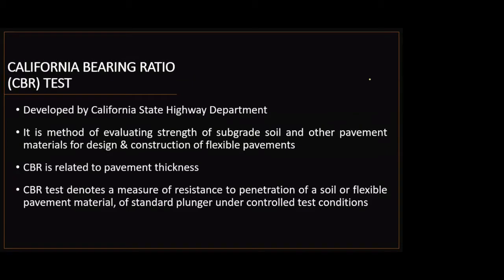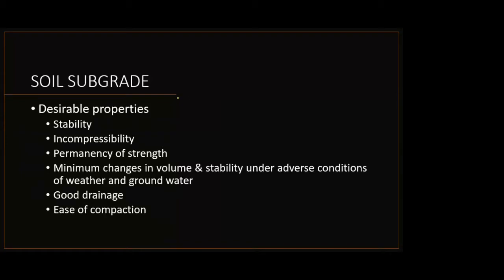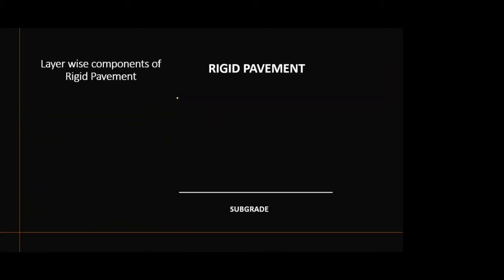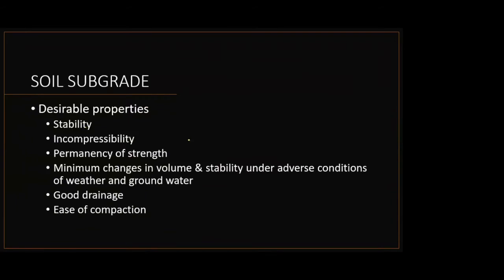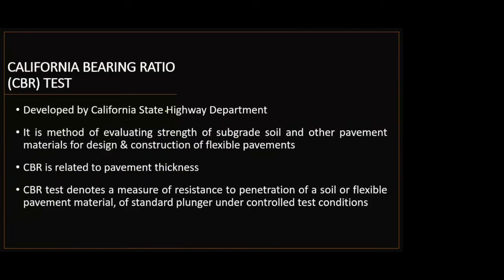Today we are going to discuss in detail the test which is widely used for determining the strength of the soil when used as a subgrade. That test is the California Bearing Ratio, also known as the CBR test. We are studying this in line with the topic from the last lecture, where we discussed soil subgrade and its desirable properties, including permanency of strength, which is essentially the CBR value.